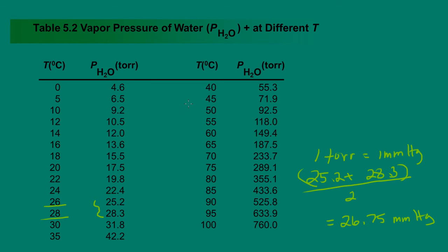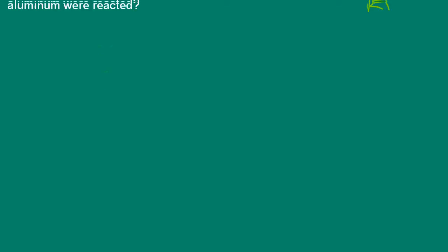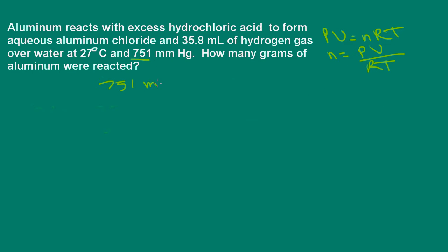I've already done this here. Note that the units of pressure here are in torr, and our total pressure is in millimeters of mercury — but one torr equals one millimeter of mercury. Taking the average of the two pressures gives us 26.75 millimeters of mercury. So we subtract that from our total pressure: 751 minus 26.75 millimeters of mercury, giving us a corrected pressure of 724.25 millimeters of mercury.